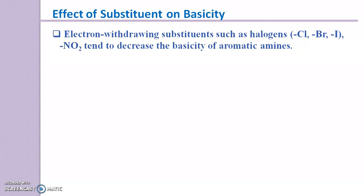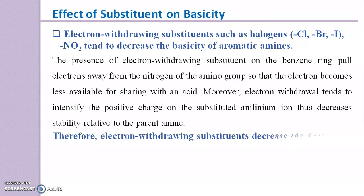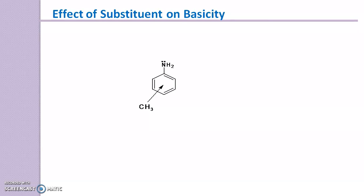Whereas electron-withdrawing substituents such as halogens, chloride, bromide, iodide, and nitro tend to decrease the basicity of aromatic amines. These substituents pull electrons away from the nitrogen of the amino group, making the electron pair less available for sharing with an acid. Moreover, electron withdrawal intensifies the positive charge on the substituted anilinium ion, decreasing its stability. Therefore, electron-withdrawing substituents decrease the basicity of aromatic amines. For example, Toluidine has a methyl group, which is an electron-releasing group, so the electrons are more available for bonding.